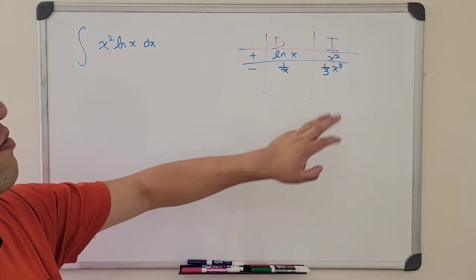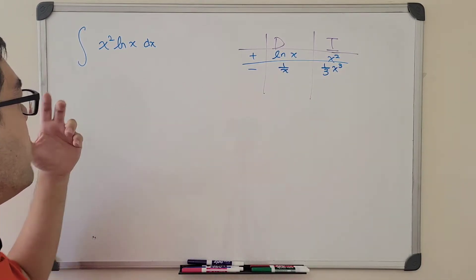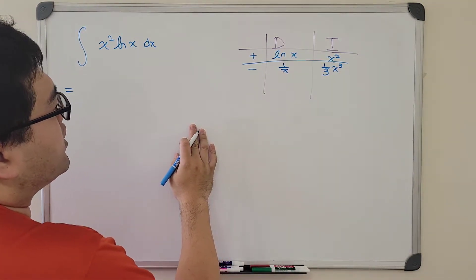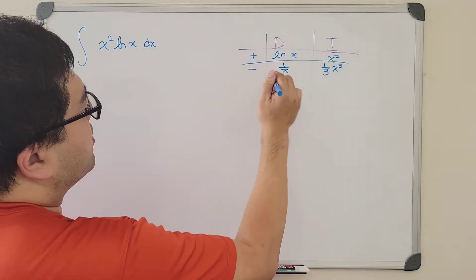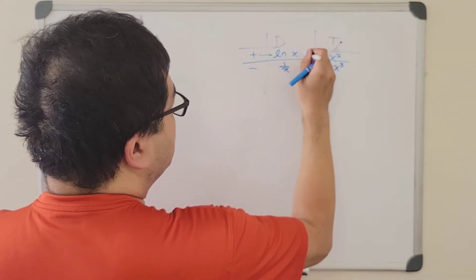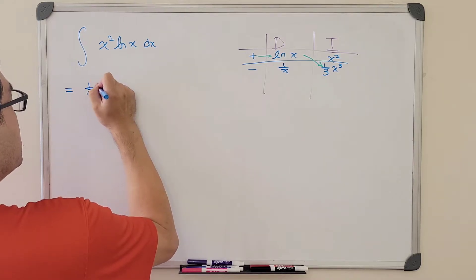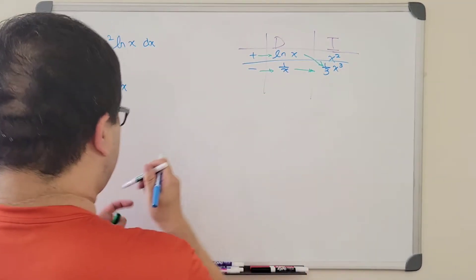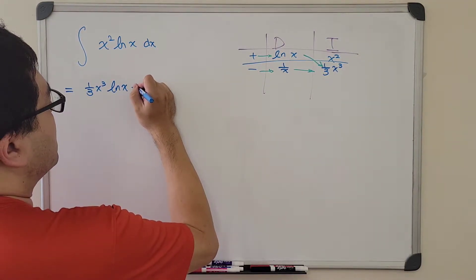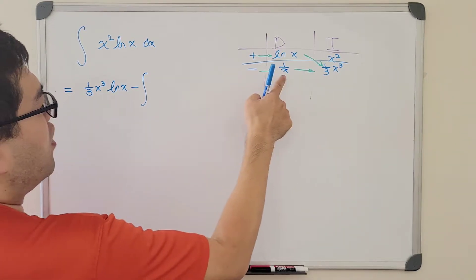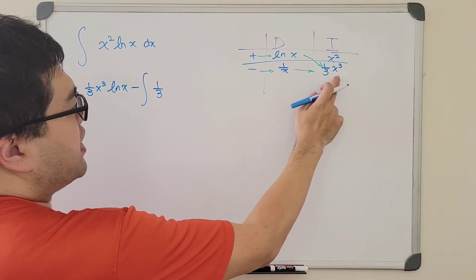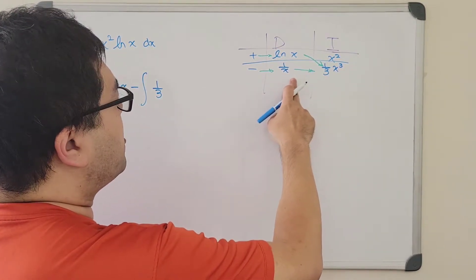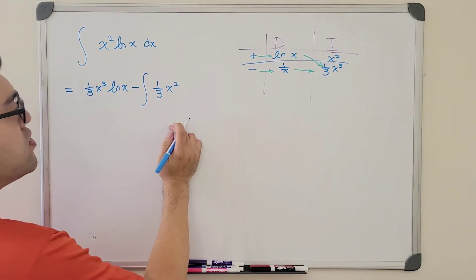Don't forget the plus C when you write your final answer, but right now we're not done. We're going to take this route to end up with 1 third x cubed times ln of x. Then we still have the remaining integral — minus the integral of the product, which is 1 third times x to the third power times 1 over x, giving us x to the negative first power. So we have 3 minus 1 in the exponent, which is 2, ending up with the integral of 1 third times x squared dx.